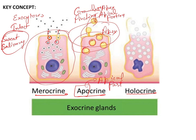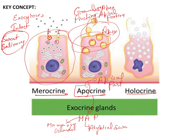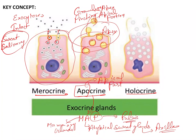Examples of apocrine glands can be remembered with the mnemonic MAP. M stands for mammary glands, A stands for atypical sweat glands — these are sweat glands seen in the axilla and pubis — and P stands for pubis. So axilla and pubis are two important sites of atypical sweat glands secreting through the apocrine method.